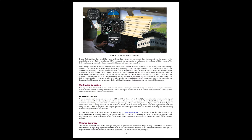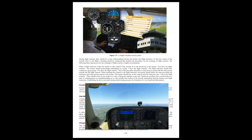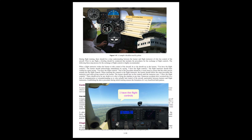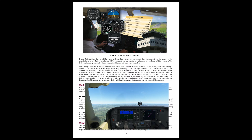During flight training there should be a clear understanding between the learner and the flight instructor of who has control of the aircraft. Prior to any flight, a briefing should be conducted that includes procedures for the exchange of flight controls. The following three-step process is highly recommended: when the instructor wishes the learner to take control, the instructor says 'You have the flight controls.' The learner acknowledges by saying 'I have the flight controls.' The instructor confirms with 'You have the flight controls.' A visual check should confirm the other person actually has the controls. The learner should stay on the controls until the instructor says 'I have the flight controls.'